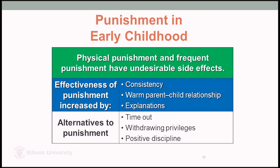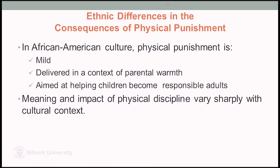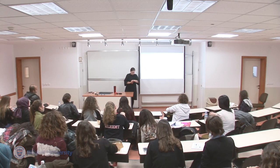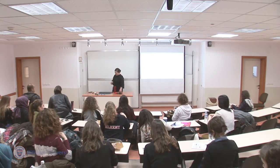The effectiveness of punishment is greatly increased by how consistent it is. If a parent punishes a behavior twice out of the five times it occurs, it is quite unlikely the child will internalize that. Warm parent-child relationships and explanations of why the punishment is happening also matter. We'll stop right here and meet again on Wednesday.